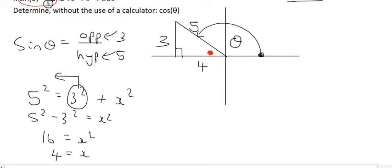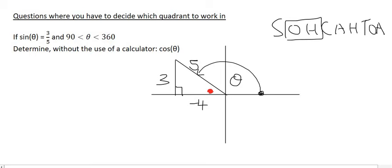And so this length over here is 4. But because it's in the negative x-axis, we'll just put a little minus there to remind us that. And so there, our triangle is complete. And now we can actually go on to the question, which says, determine without the use of a calculator the value of cos theta. Well, cos is the adjacent over the hypotenuse. And so we've got the adjacent as minus 4. So we can say cos theta equals minus 4. And the hypotenuse is 5. And that's the end of the question.